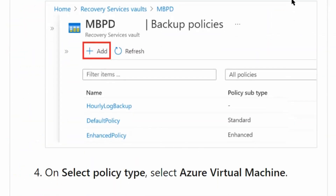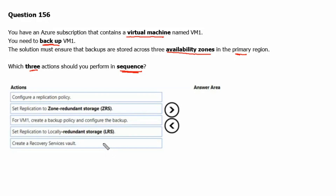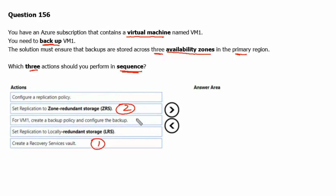Let's go back to the question. The first action would be creating a Recovery Services Vault. The second action would be setting the replication to zone redundant storage, since we are looking for three availability zones. And the last action would be that for virtual machine VM1, we will create a backup policy and configure the backup.